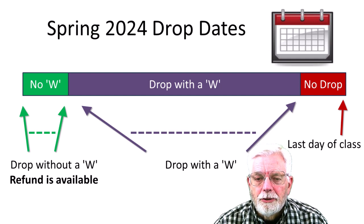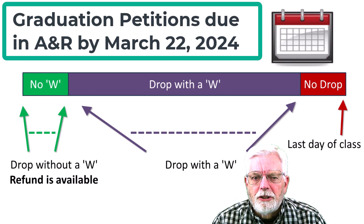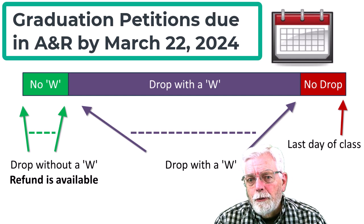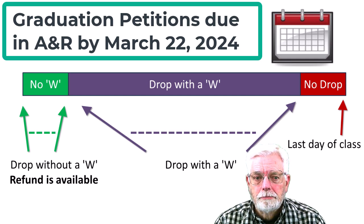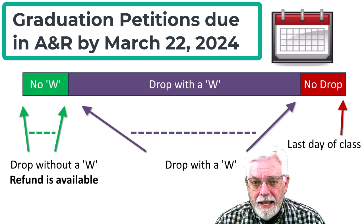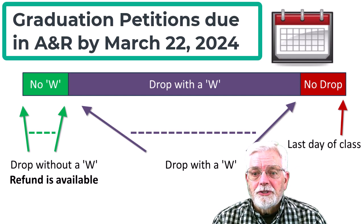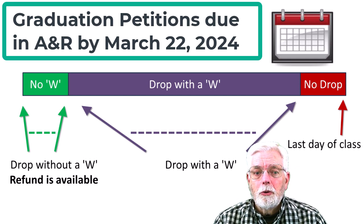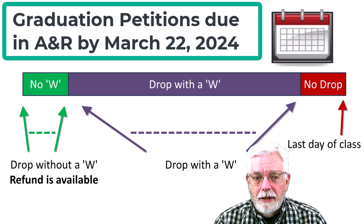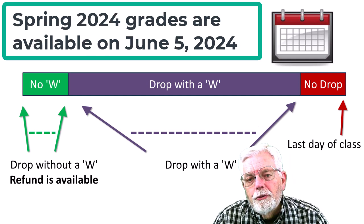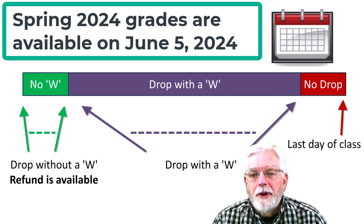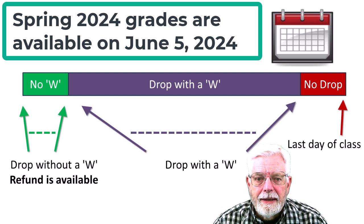Another date is also important. Graduation petitions for spring 2024 are due in the Office of Admissions and Records by March 22, 2024. This date occurs even before the start of the CIS 54-102 C/C++ Programming class. Another important date is June 5, 2024 — grades for the spring 2024 semester are available in self-service by that date.